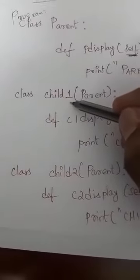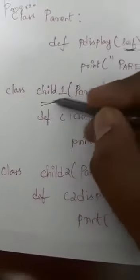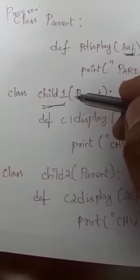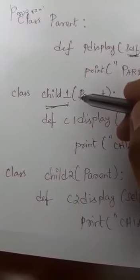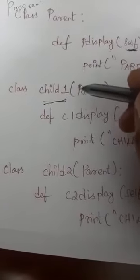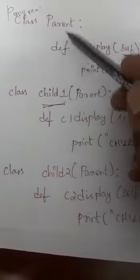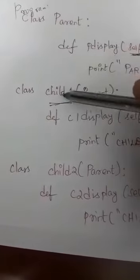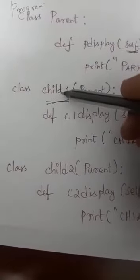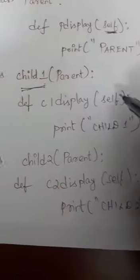Now I am going to create my child classes. My first child class name is 'child one' and my second child class name is 'child two', as shown in the diagram. I need to declare three classes total — one parent class and two child classes, one derived class for child one and another derived class for child two.